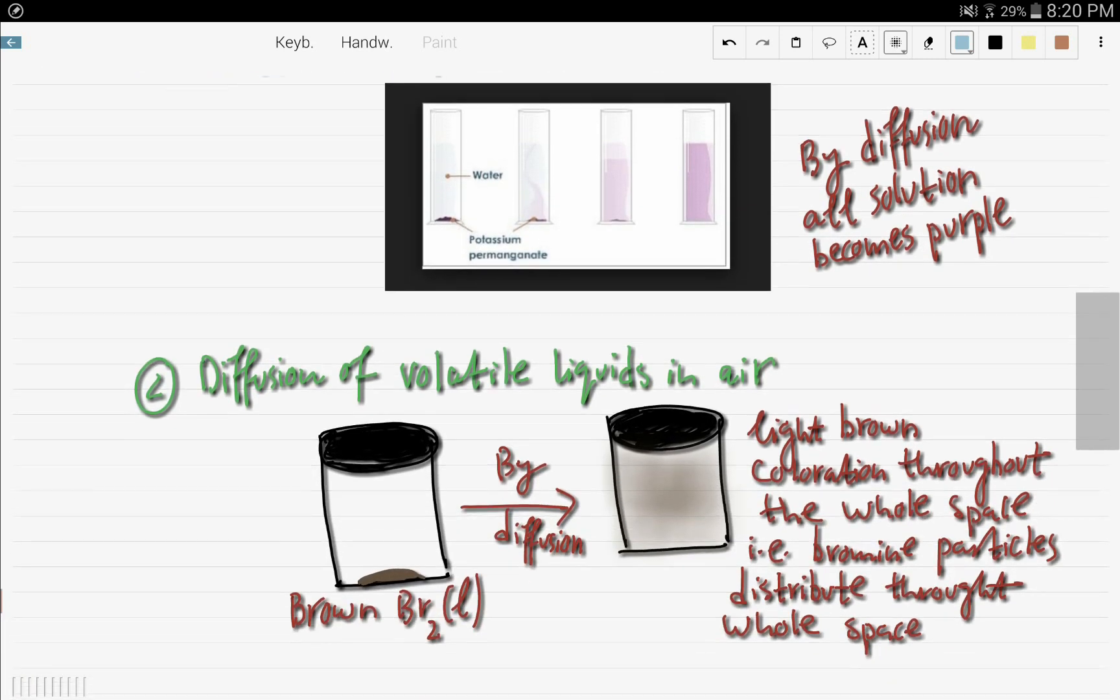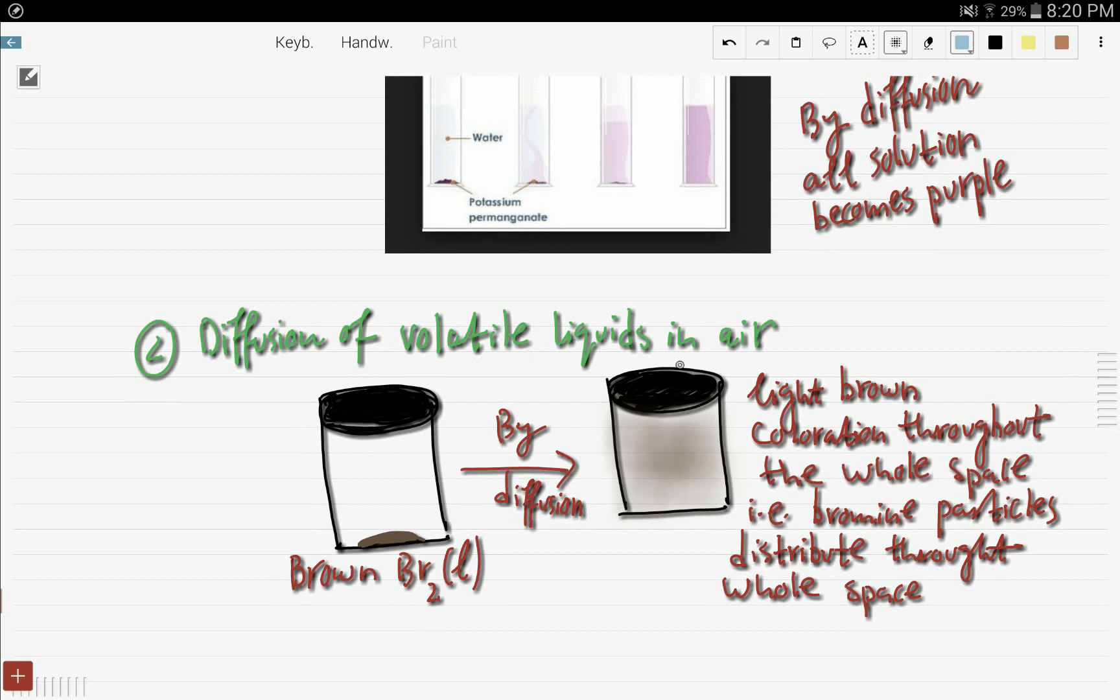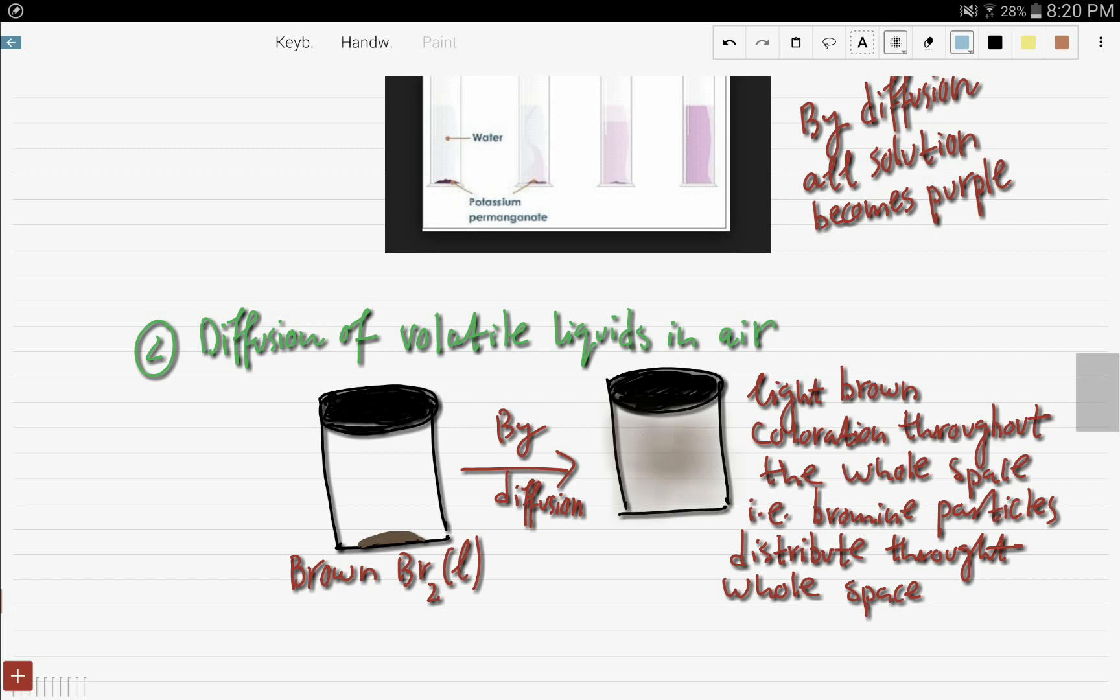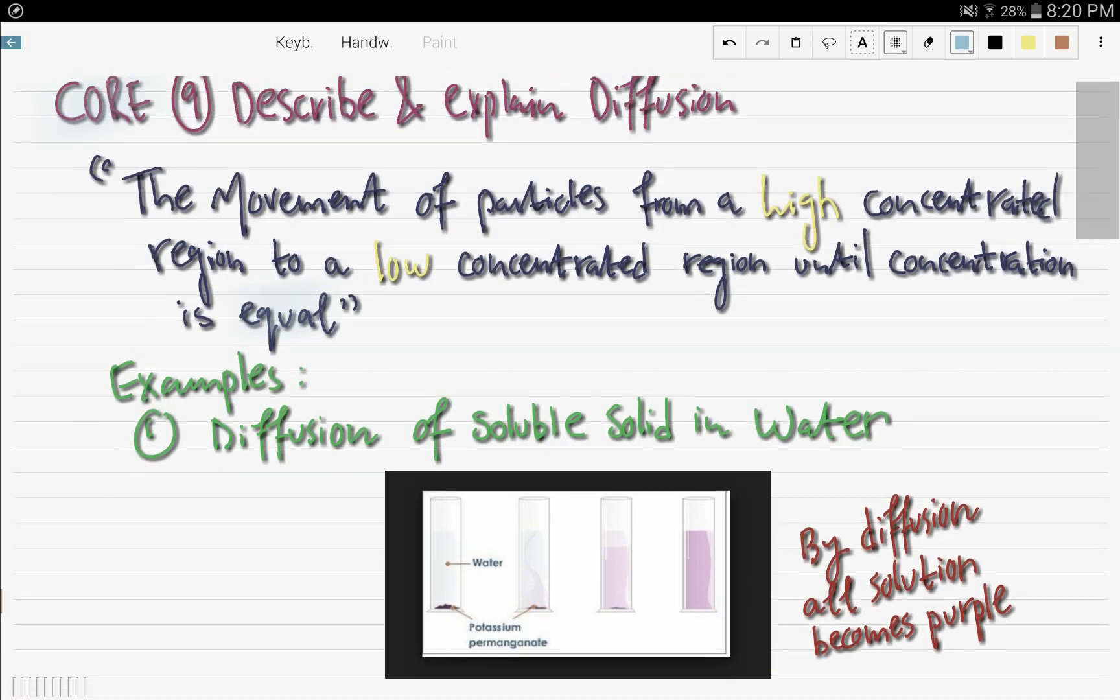The second example is the diffusion of a volatile liquid in air. Volatile liquid is a liquid that can change into a gas. So here we have brown bromine. And by diffusion, you will see that there is light brown coloration throughout. That is the whole, the bromine particles distribute throughout the whole space. So because it was concentrated here and then it distributed all. And so now there is a uniform concentration throughout.